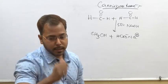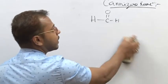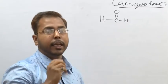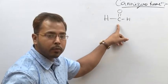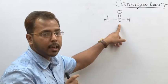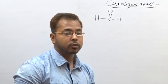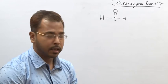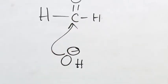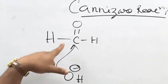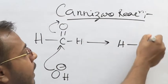To understand this, we need to know the mechanism. OH⁻ acts as a nucleophile — why? Because there are no alpha hydrogens. This is the functional carbon; the carbon atom attached to the aldehyde group is known as the alpha carbon. Since there is no alpha carbon, there is no alpha hydrogen. So when OH⁻ is present in the medium, it directly attacks as a nucleophile to the electrophilic carbonyl carbon.